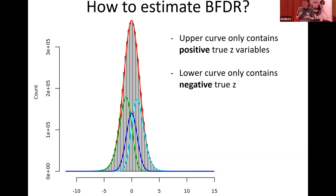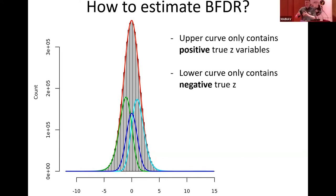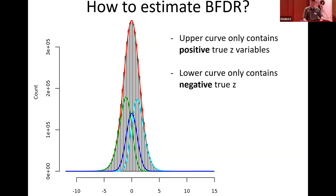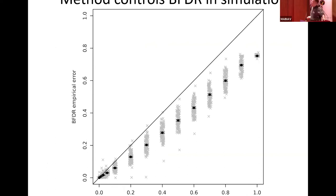Once you've worked out the posterior probability that a SNP has a positive or negative effect, it opens up the whole world of inferential possibilities. With additional work, you can determine which SNPs have larger effects than others — this is the basis for the Bigger FDR. In simulations, the method works well: for every alpha threshold, SNPs with BFDR lower than alpha have a true BFDR error rate also lower than alpha, across 100 simulated GWAS under different genetic architectures.